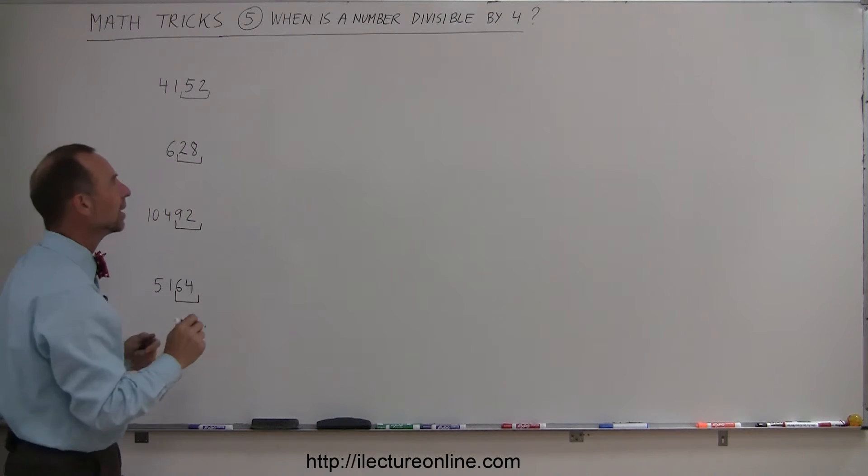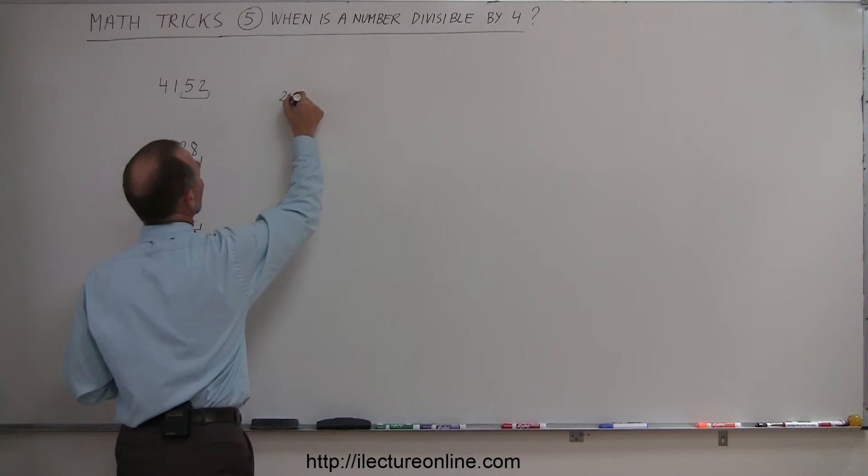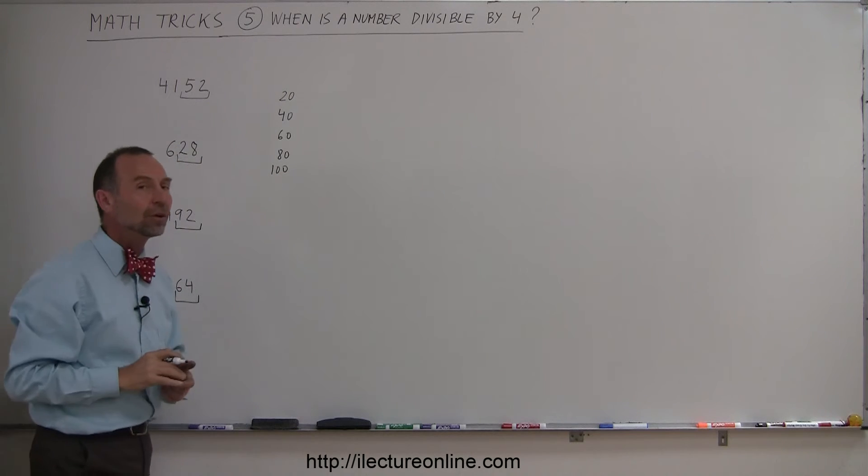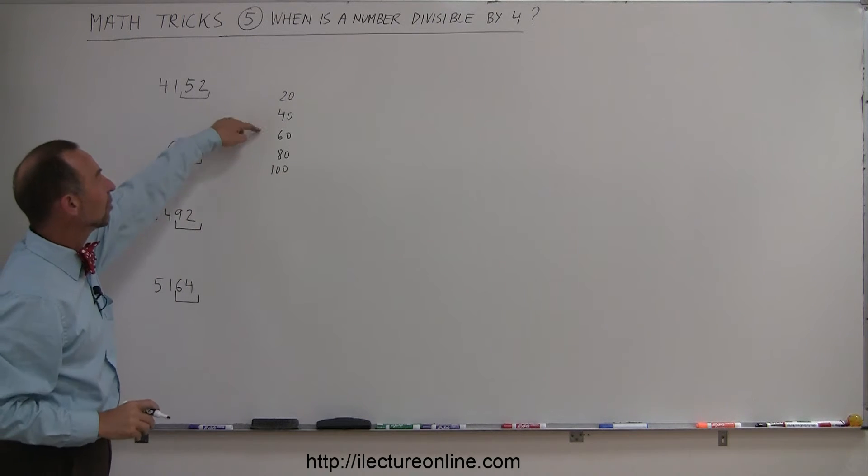And then the way you think about it is you know that 20 is divisible by 4, so is 40, so is 60, so is 80 and of course 100. So what you do is you go to the nearest of these numbers right here.